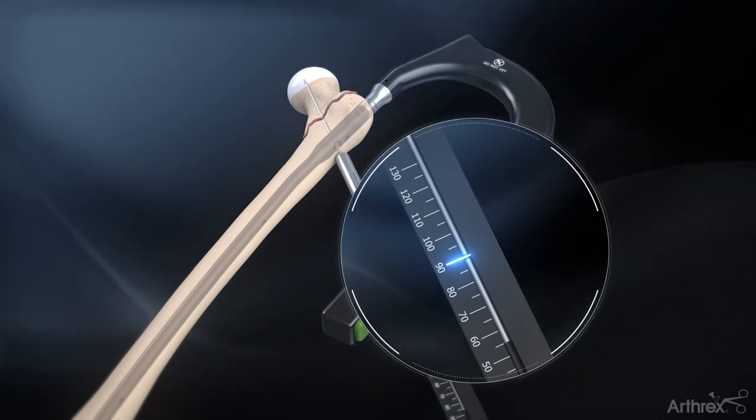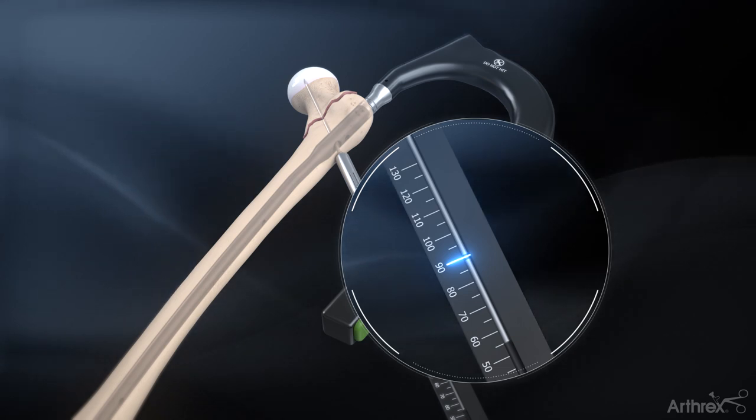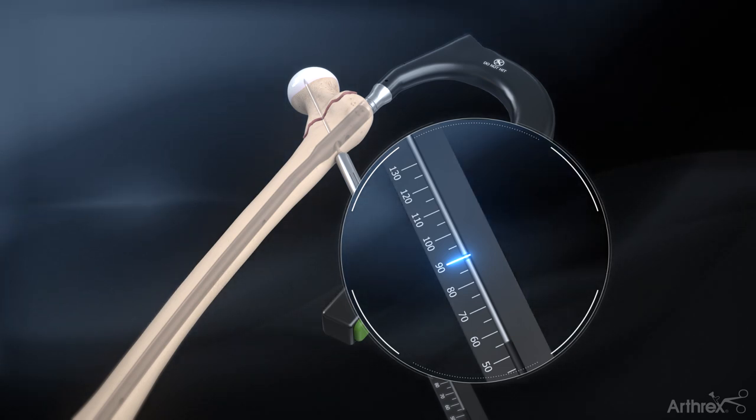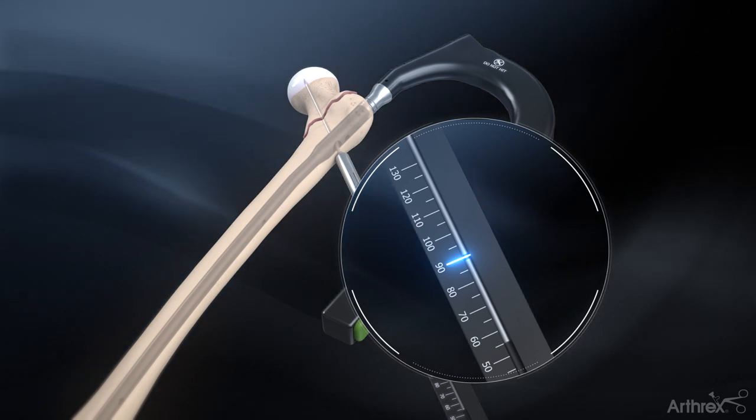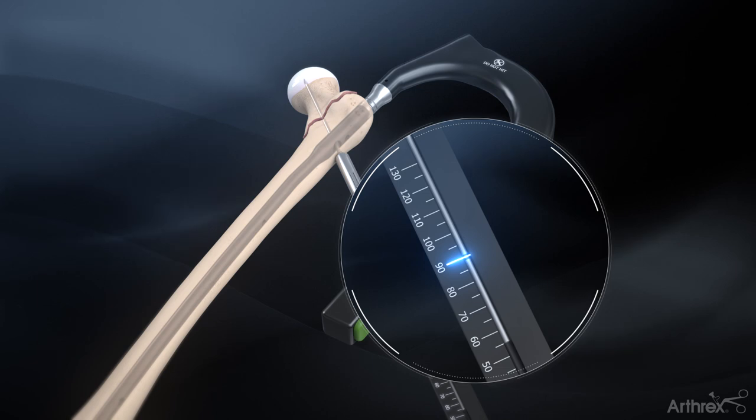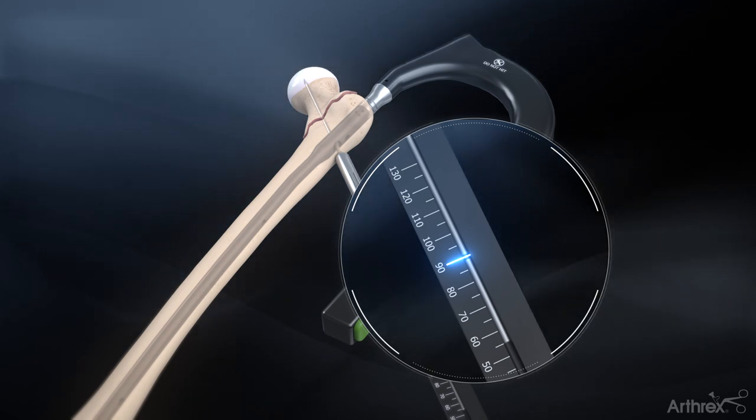The guide pin is measured to the tip, so at least 5 to 10 mm should be subtracted from the measurement when determining drilling depth and lag screw length selection. Other factors such as fracture reduction, nail position, and anticipated fracture compression should be accounted for.